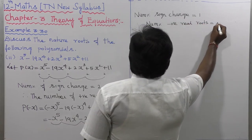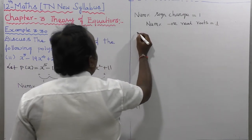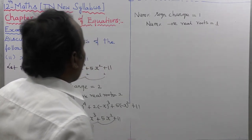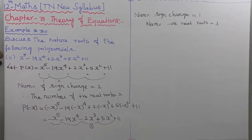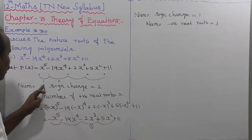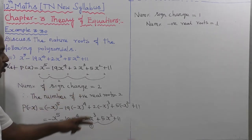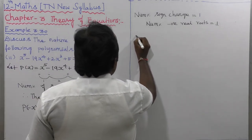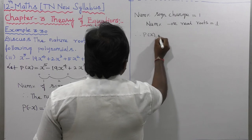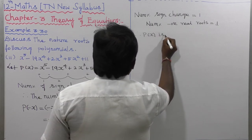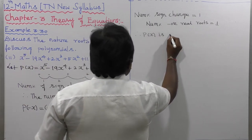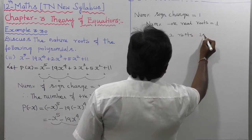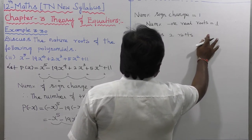Therefore, the number of negative real roots equal to 1. So P of x has 5 roots total: 2 roots are positive, 1 root is negative, and the other 2 roots are imaginary.